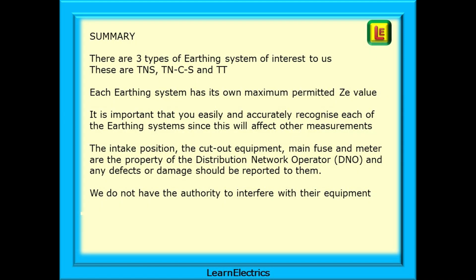A quick look back then. There are three types of earthing systems of interest to us. These are TNS, TNCS and TT. Each earthing system has its own maximum permitted ZE value and ZE is a measurement of the outside world. It is important that you easily and accurately recognise each of the earthing systems since this will affect other measurements. The intake position, the cutout equipment, main fuse and metre are the property of the distribution network operator or DNO and any defects or damage should be reported to them. We do not have the authority to interfere with their equipment. And that was a brief overview of how ZE is affected by different types of earthing systems.